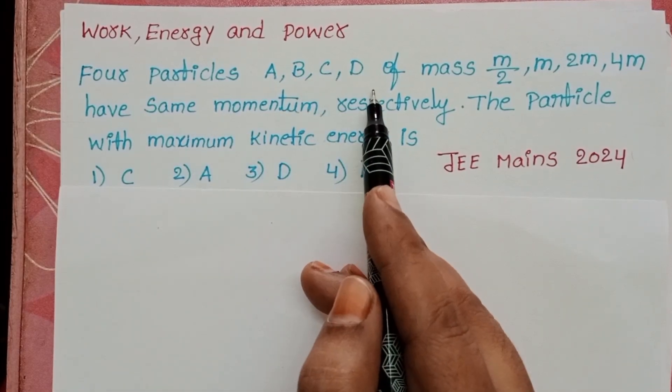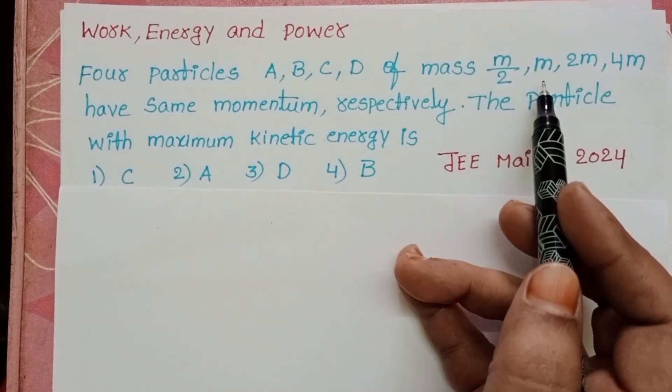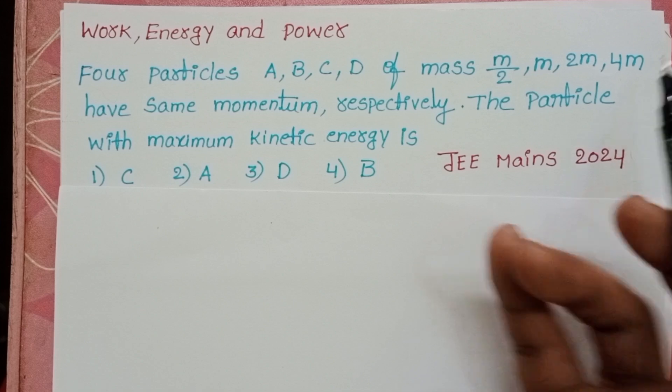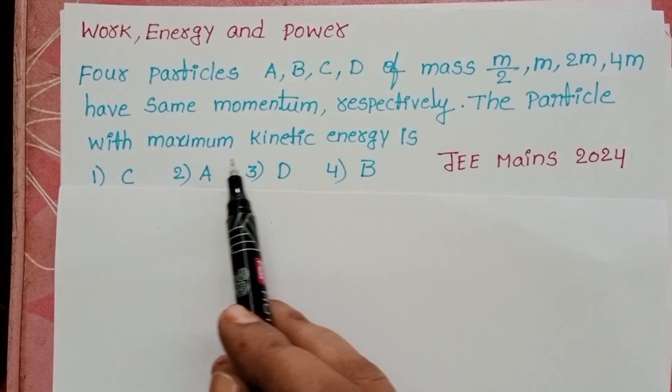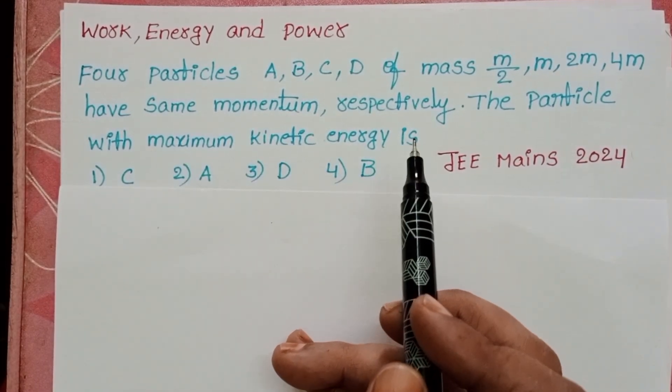Four particles A, B, C, D of masses M by 2, M, 2M, and 4M have the same momentum. The particle with maximum kinetic energy is?